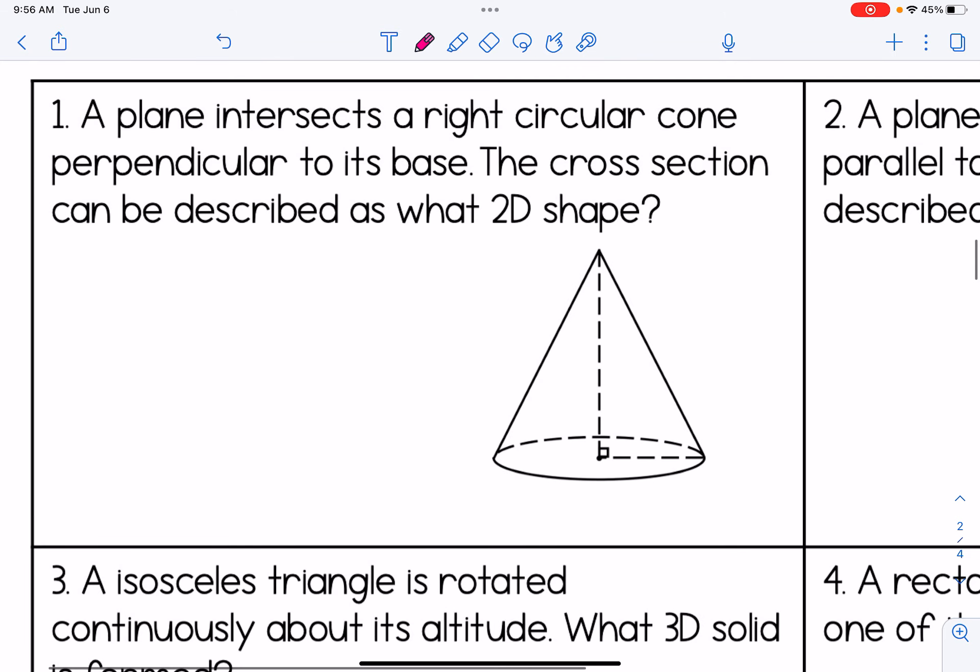Number one, a plane intersects a right circular cone perpendicular to its base. The cross-section can be described as what two-dimensional shape. So this is like you're taking a cone and you're slicing it perpendicular to the base. It's forming a right angle with the base of the shape. So the hint I gave you on the previous page is that whenever the cross-section is perpendicular to the base, it's in a way the shape of the cross-section is like the shape of the lateral faces or sides. If you look at a cone head-on, it looks triangular. So the cross-section of a cone, when cut perpendicular to the base, is a triangle.